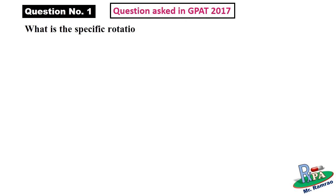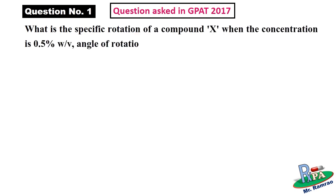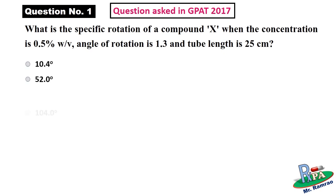Now for the question time. Let's start with the question asked in GPAT 2017: what is the specific rotation of compound X when the concentration is 0.5 percent weight by volume, the angle of rotation is 1.3 degrees, and the tube length is 25 centimeters? Your options are provided. If you want to solve this problem on your own, pause the video and try to solve it — I will answer it after this timer.